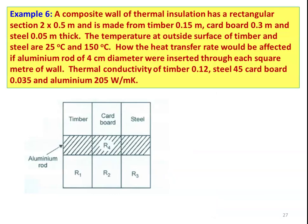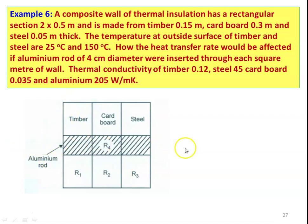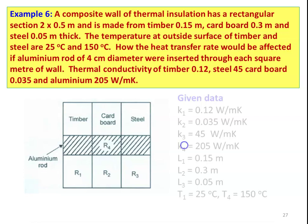Example number 6: A composite wall of thermal insulation has rectangular cross-section 2 × 0.5 m and is made of timber (0.15 m thick), cardboard (0.3 m thick), and steel (0.05 m thick). The temperature of the outside surface of the timber is 25°C and the steel is 150°C. How would the heat transfer rate be affected if an aluminum rod of 4 cm diameter were inserted through each square meter of the wall? Thermal conductivities: timber = 0.12, cardboard = 0.035, steel = 45, aluminum = 205 W/m·K. We calculate heat transfer first without then with the aluminum rod, then find the difference.